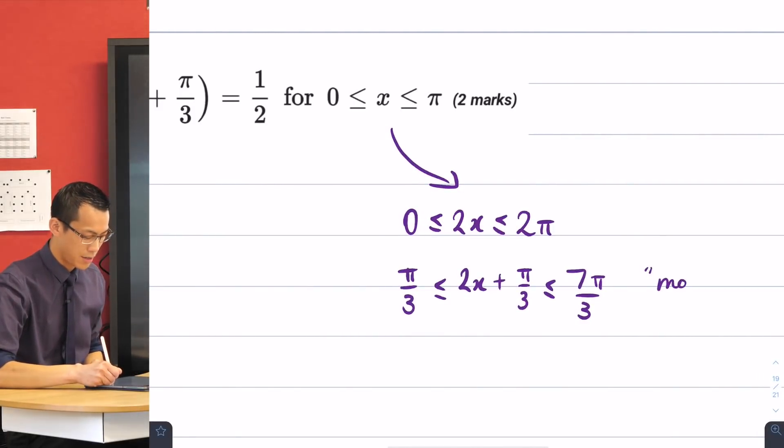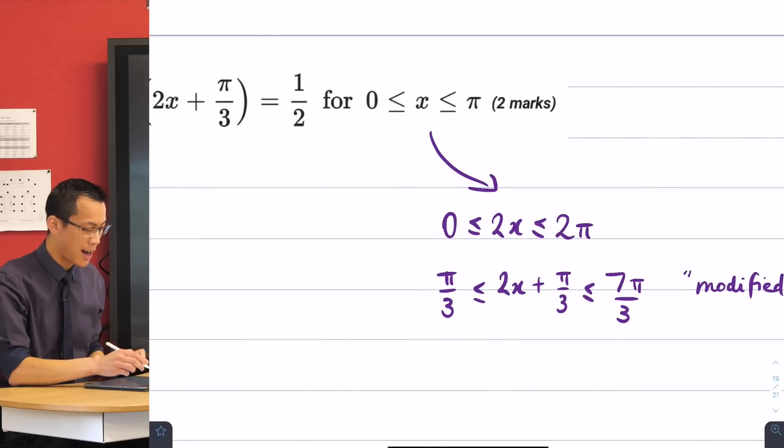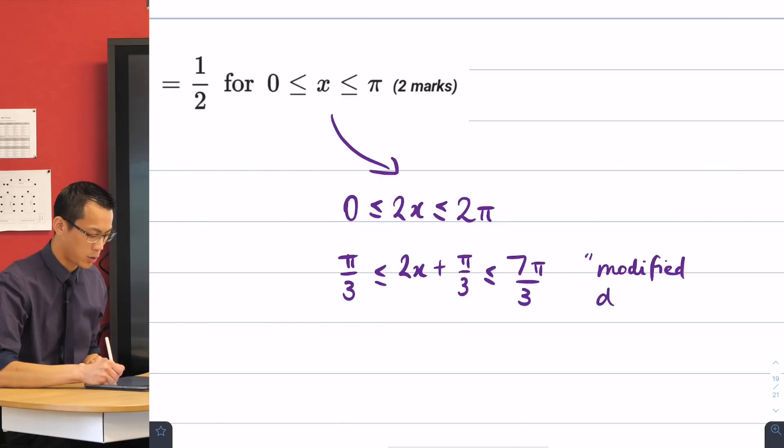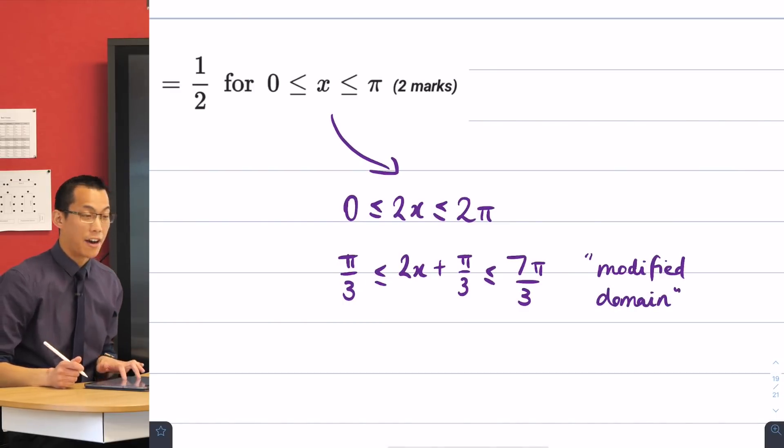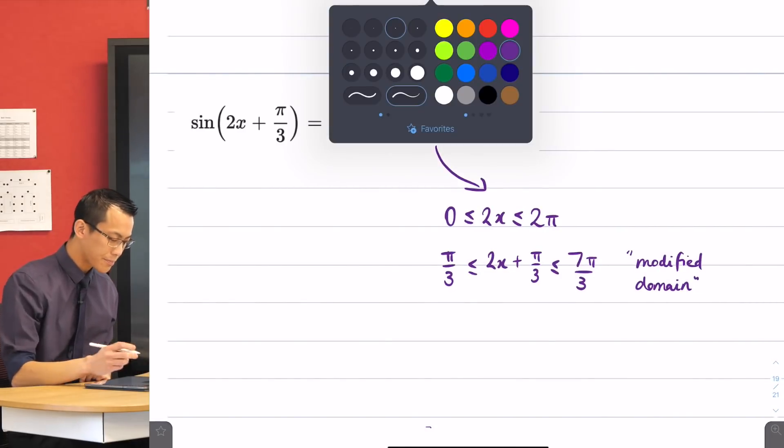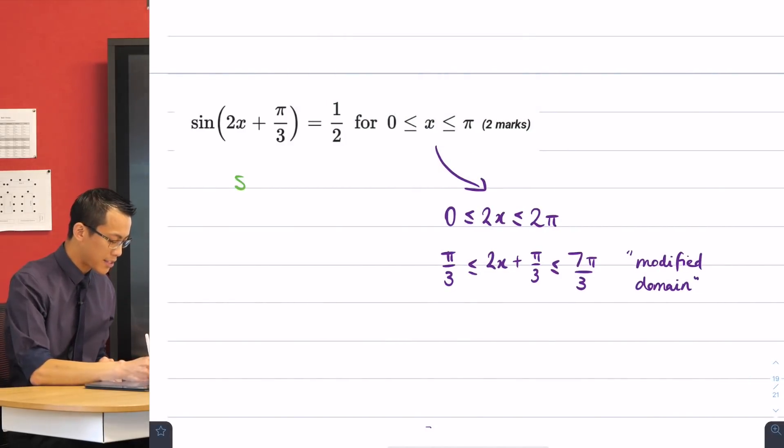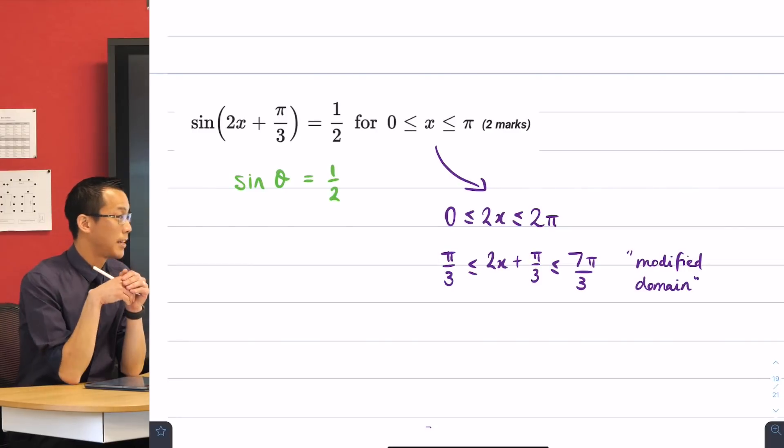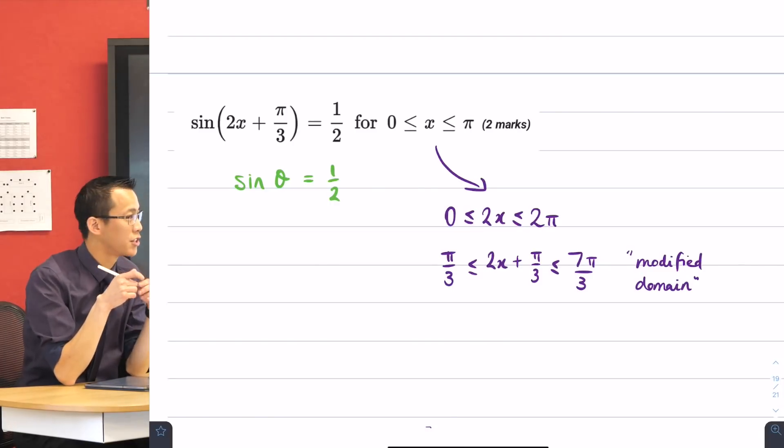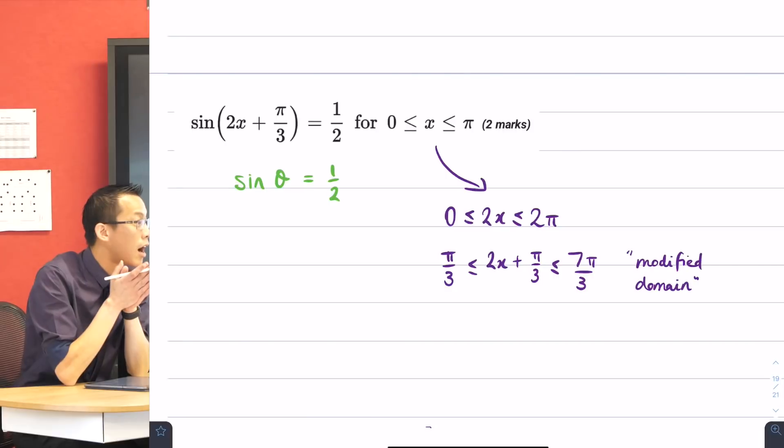The question has a modified, what we call an argument, this thing in here. So I'm going to modify my domain so it looks more like that. Now, you're going to see why that's useful in a second. Now let's return to the question. I'm going to think about a simpler version of this question, a question I'm much better at answering. Let's just think about... Forget about the 2x plus π on 3 for a minute. We'll return to it. Let's just think about sine of something equals a half.